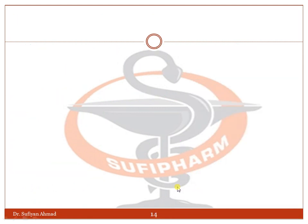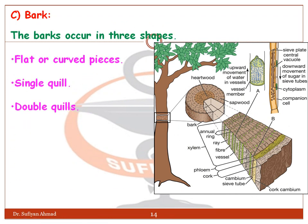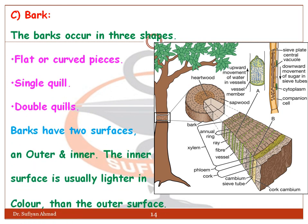Next is the bark. The bark occurs in three shapes: flat or curved pieces, single quill, and double quills. The bark has two surfaces — outer and inner. The inner surface is usually lighter in color than the outer surface.